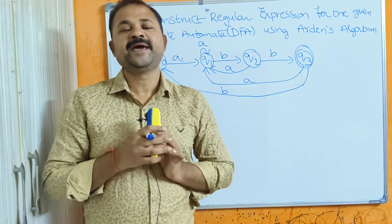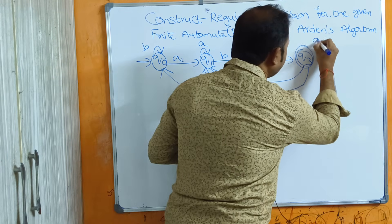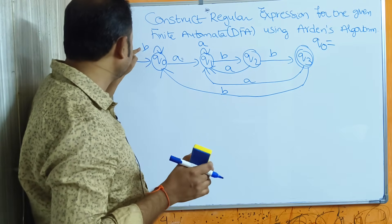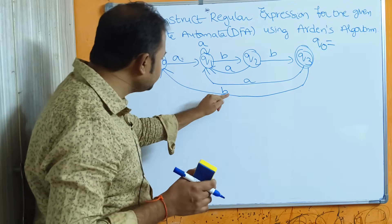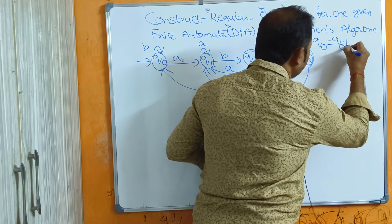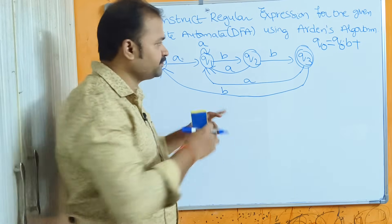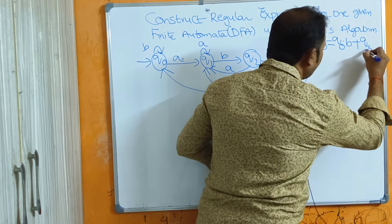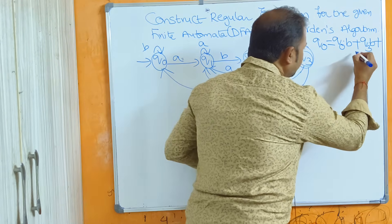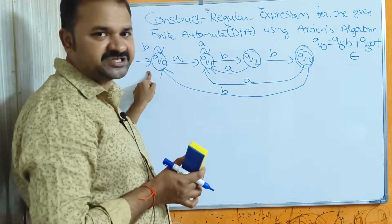The first step is to construct the state equation for all the states based on the incoming edges. For q0, what are the incoming edges? We have two edges, both with input symbol b. So q0 equals q0·b plus q3·b. Since q0 is the initial state, we add epsilon to its state equation.